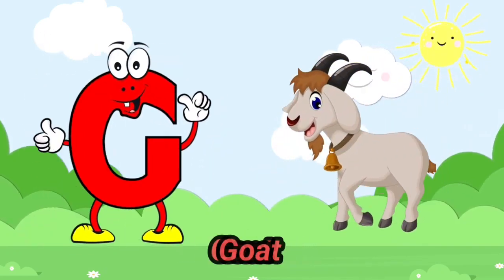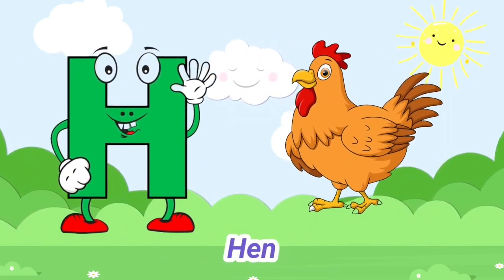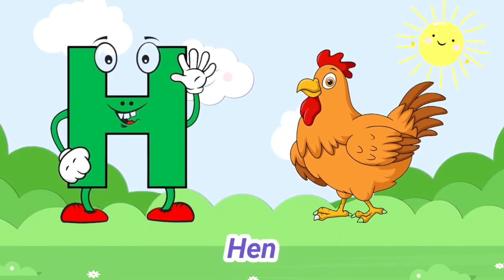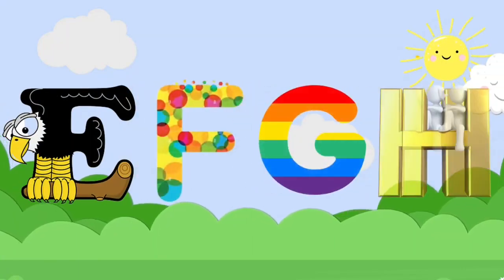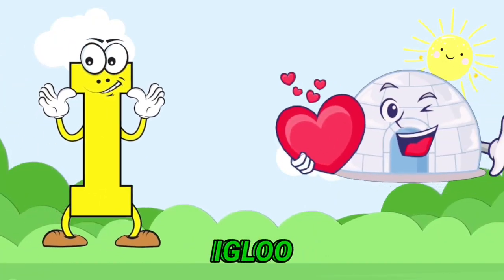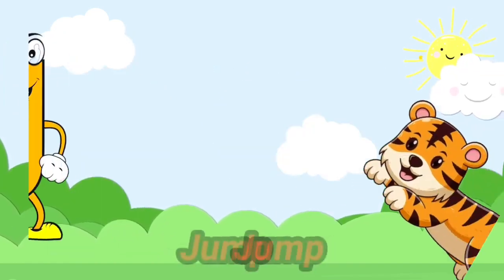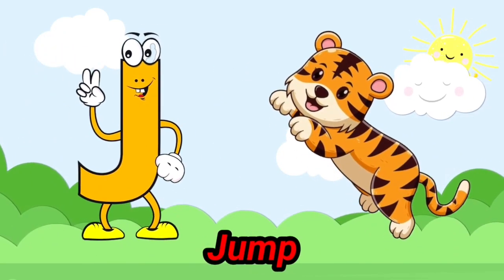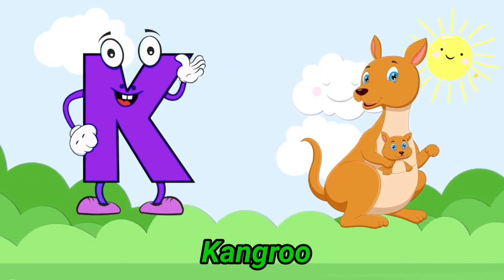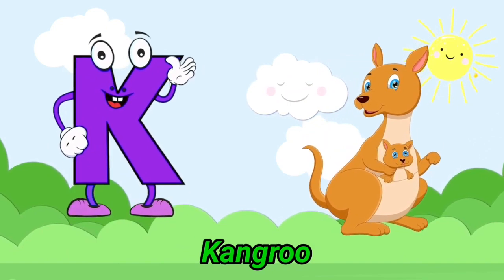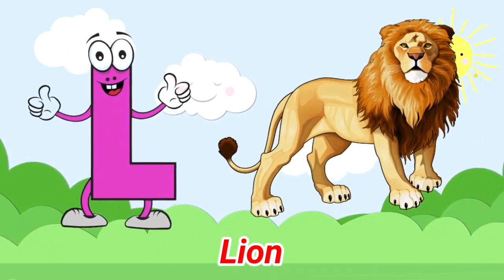G is for goat, g-g-goat. H is for hand, h-h-hand. I is for igloo, i-i-igloo. J is for jump, j-j-jump. K is for kangaroo, k-k-kangaroo. L is for lion, l-l-lion.